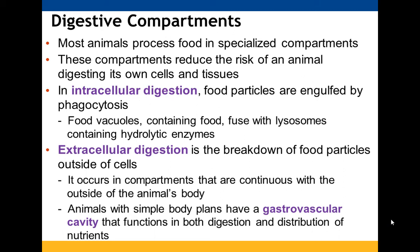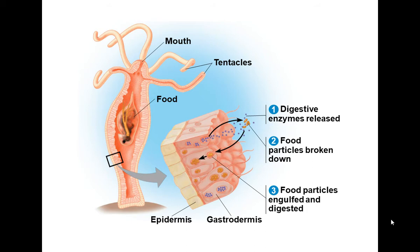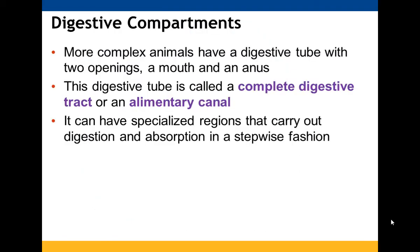Most animals process their food in specialized compartments. This helps us avoid digesting our own cells — only the materials that have been taken in. Intracellular digestion is when food particles are broken down via phagocytosis. Extracellular digestion breaks down food outside of the cells, which is essentially what we do — in compartments continuous with the external part of the animal's body. Simple body plans have a gastrovascular cavity, like a hydra, that handles both digestion and distribution. More complex animals have a complete digestive tract with both a mouth and an anus — also called an alimentary canal — with regions that allow digestion and absorption to occur step by step.